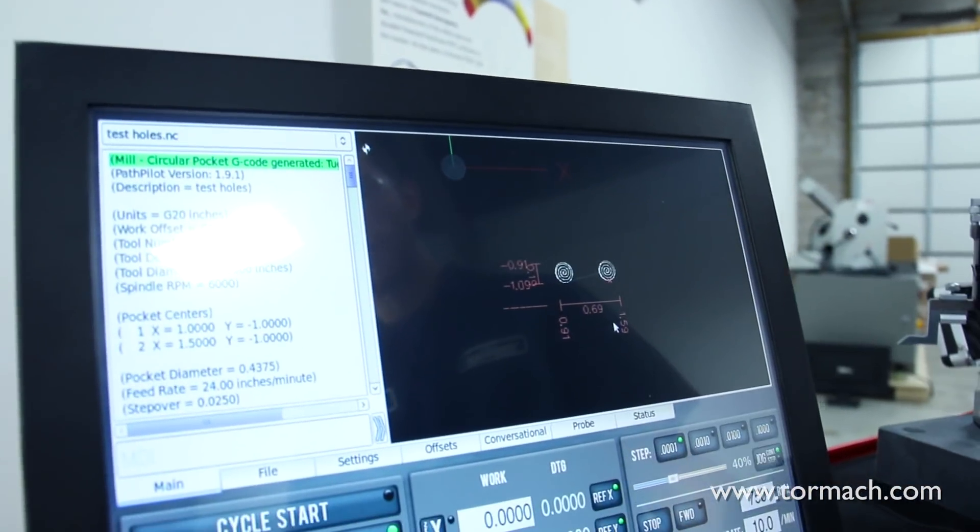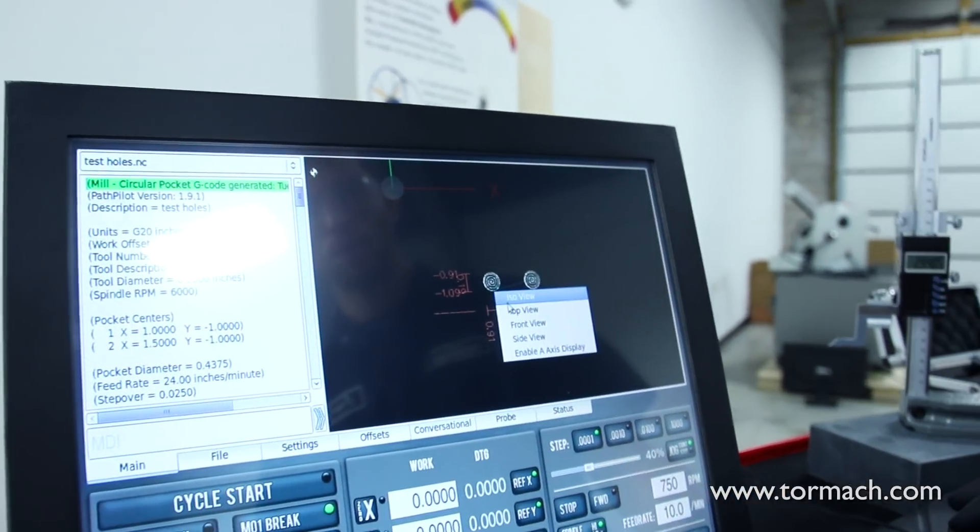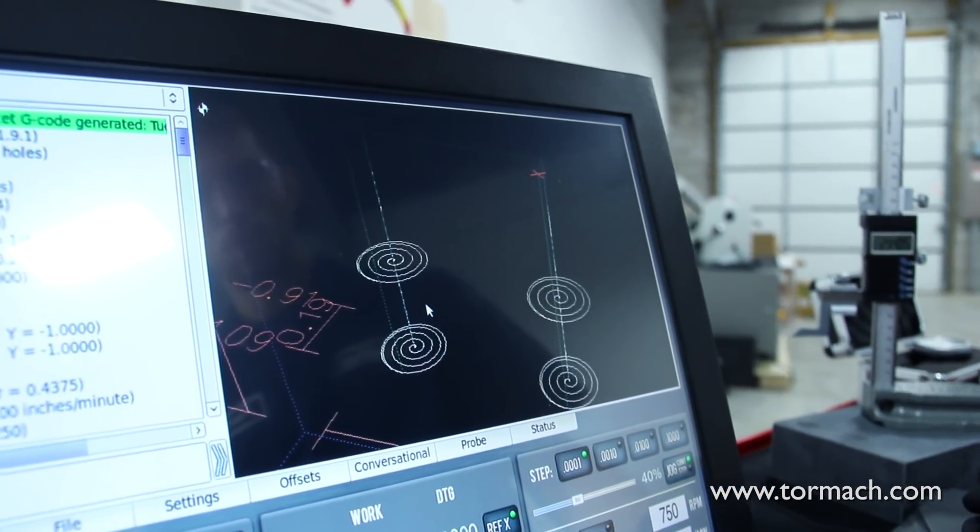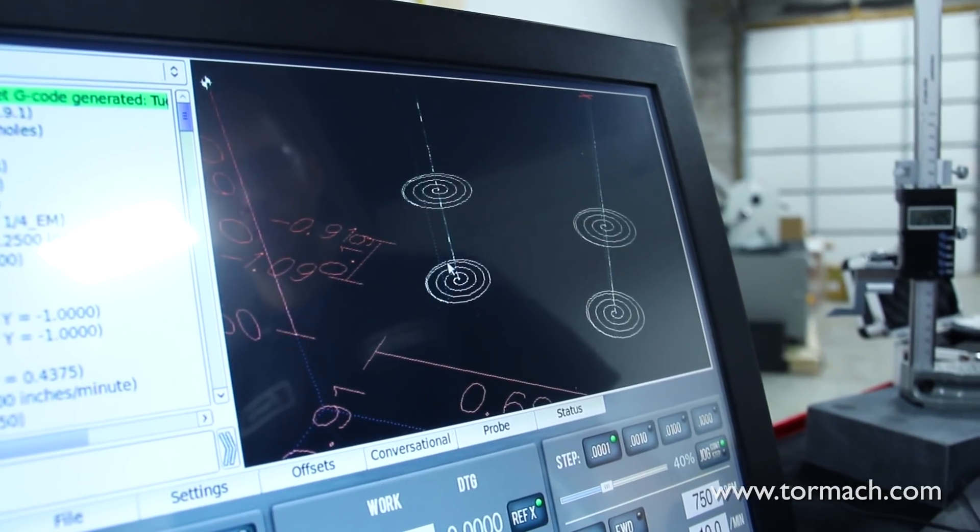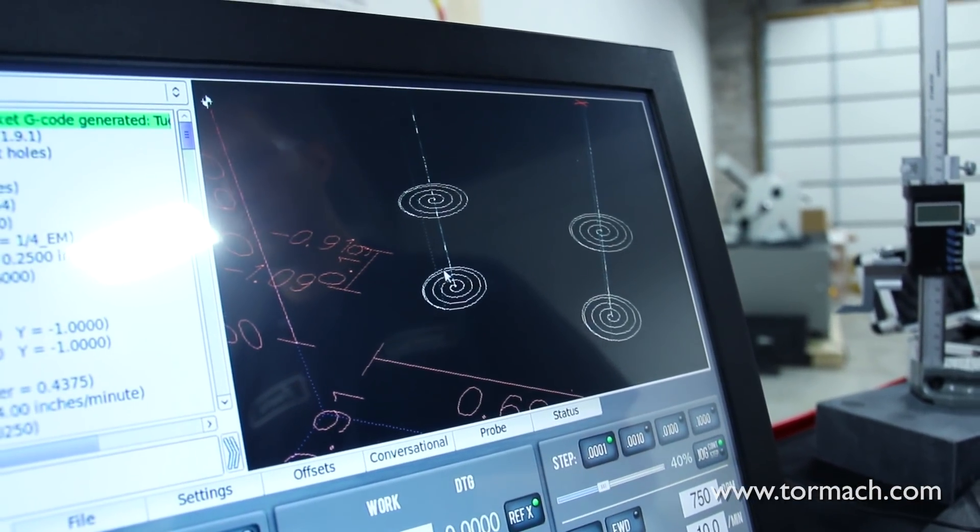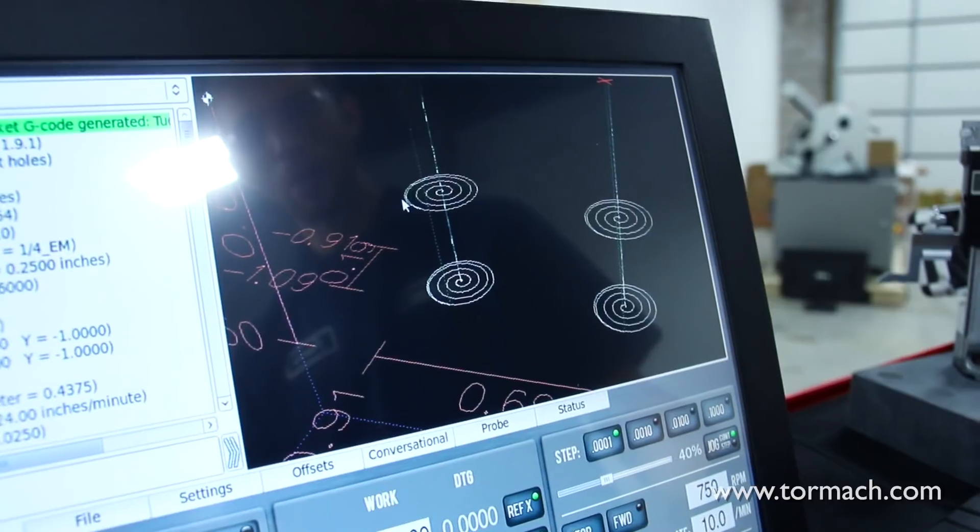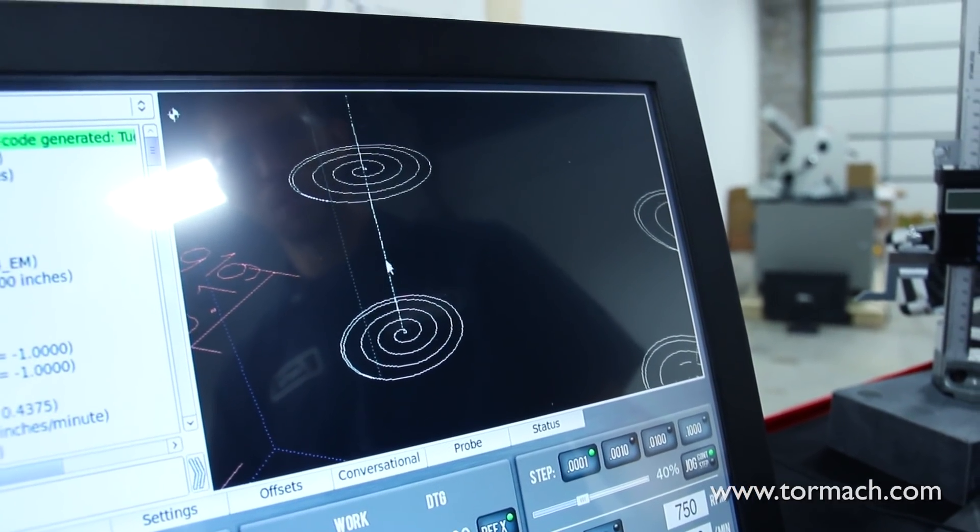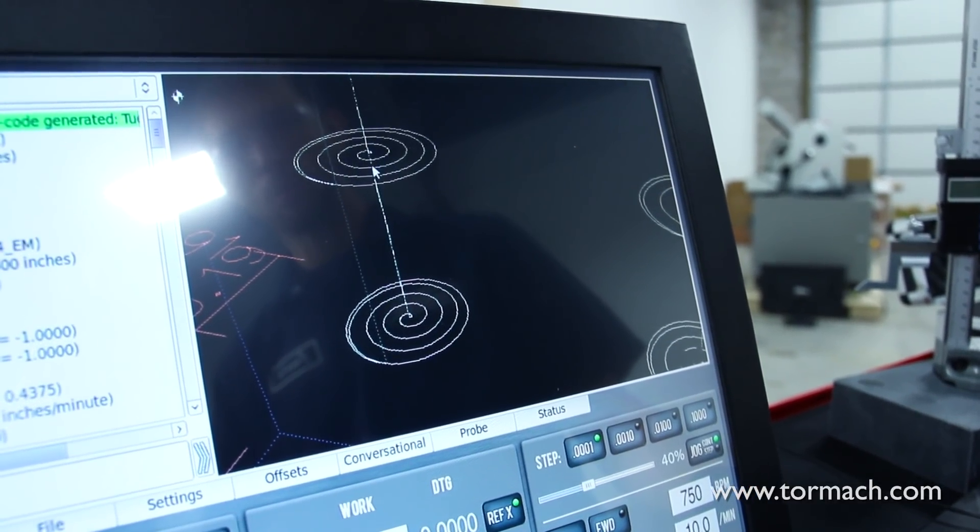You can see on the tool path display we get a nice spiral tool path. If we go to an isometric view by right clicking on this, you can see with this tool diameter and hole diameter that PathPilot went ahead and did a small pecking routine to get the tool down into the part.